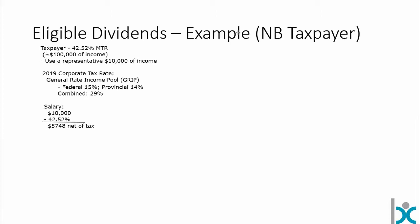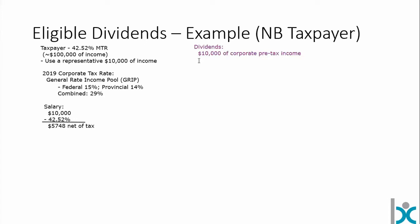If we decide to take dividends instead — keep in mind there would still be Canada Pension Plan on those amounts and whatever other payroll withholding applies — but just taking taxes into account: we have $10,000 of corporate pre-tax income, but you can't take that full amount out as a dividend. A dividend is after-tax profits of the corporation, so we have to knock off 29% for the corporate tax rate. That leaves us with $7,100 available to pay as a dividend.